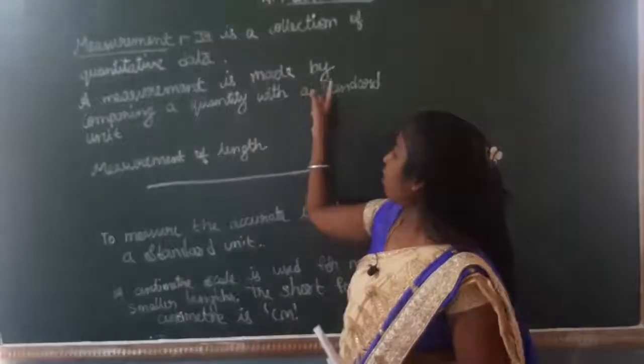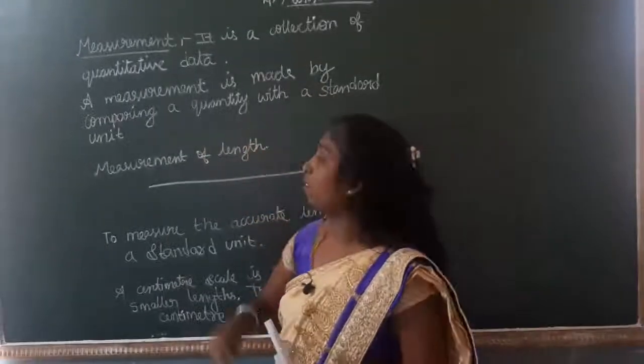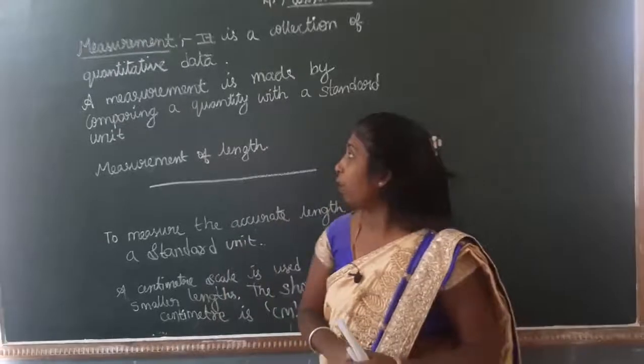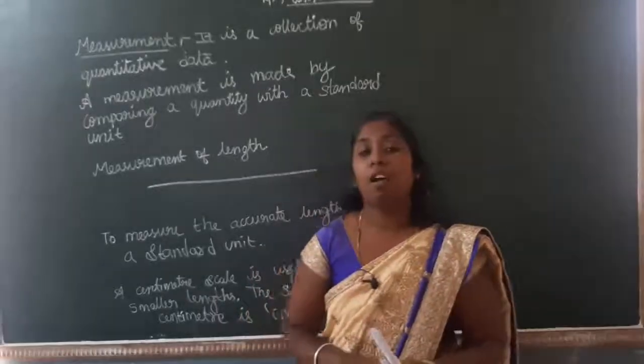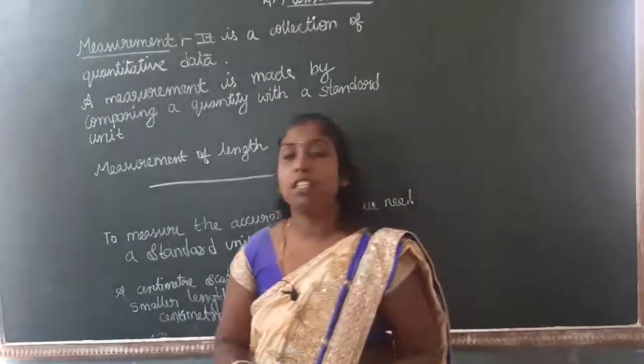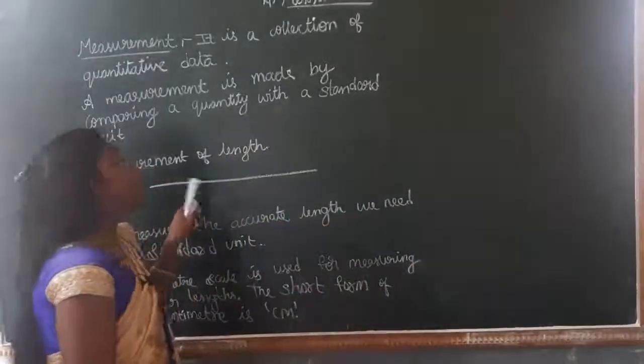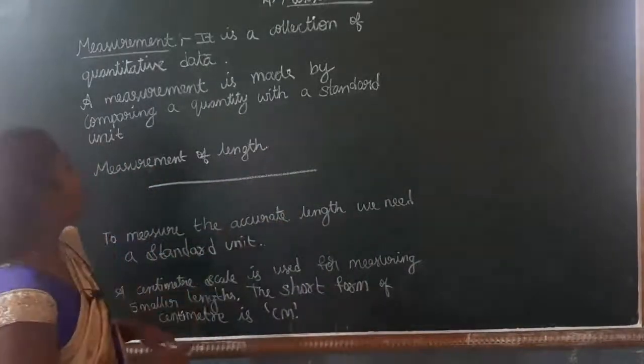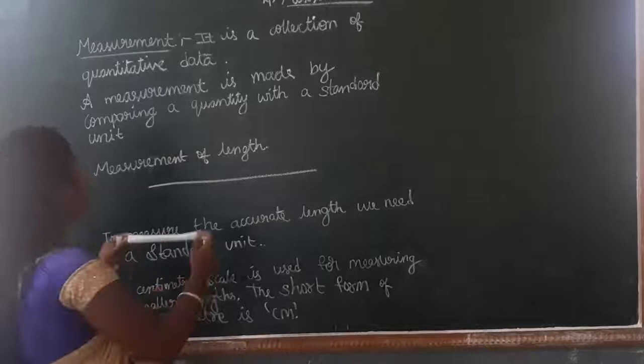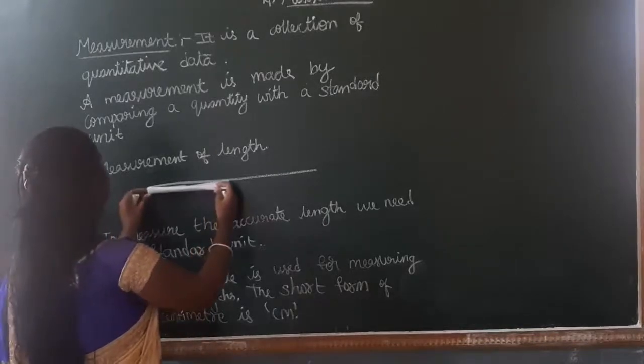A measurement is made by comparing a quantity with a standard unit. So I have one line. So I have to measure this with this paper.